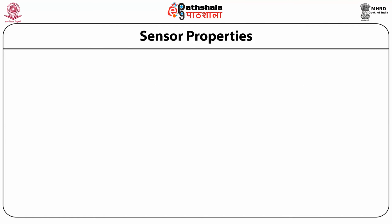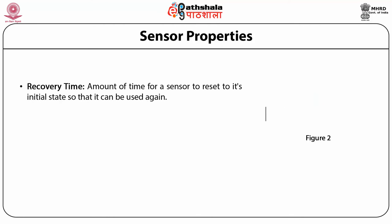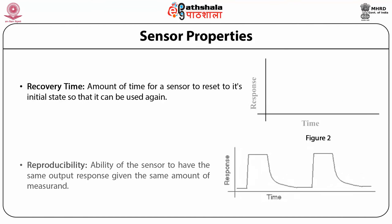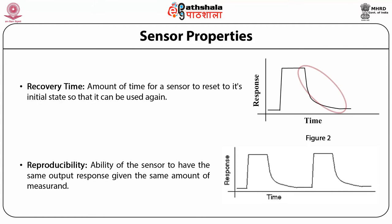The recovery time, shown in the circled portion of the figure, is basically the amount of time for a sensor to reset to its initial state so that it can be used again. Next is reproducibility: it is the ability of the sensor to have the same output response given the same amount of measurement.